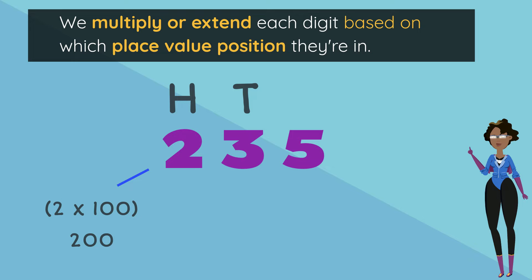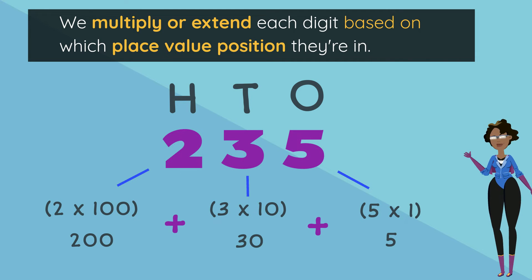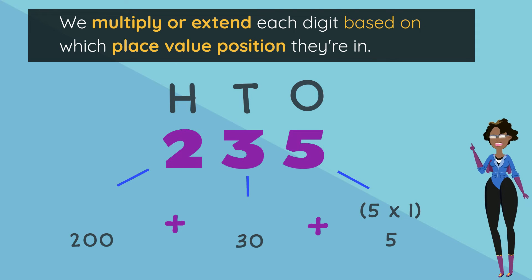3 is in the tens place or position so it's 3 multiplied by 10 or 30. And 5 is in the ones place or position so it's 5 multiplied by 1 which gives us 5. So when we add them all up together, we get 200 plus 30 plus 5 which is 235.